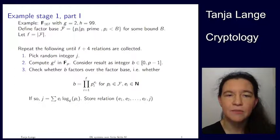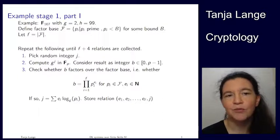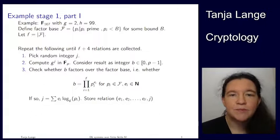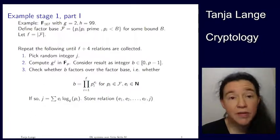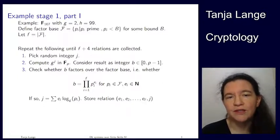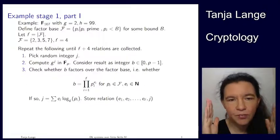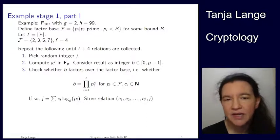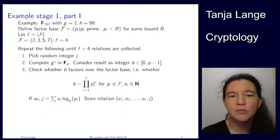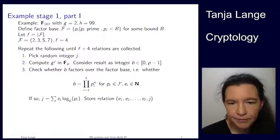As a small example, I'm looking at the prime 107 with g=2 as a generator, meaning every non-zero element from 1 to 106 is a power of 2. I'm picking 99 as the target to find the discrete log of. I define a factor base with just the first four primes: {2, 3, 5, 7}, so f=4. I'll deviate slightly from the algorithm — the f plus four requirement is meant for large examples; for small ones, even f relations may suffice.